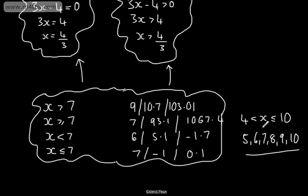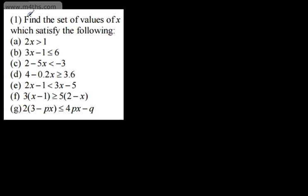In this video we're going to start by looking at some basic revision on linear inequalities. In a later video we will consider quadratic and then combined quadratic and linear inequalities. So, we're asked to find the set of values of x which satisfy the following inequalities. On the first one: 2x is greater than 1. Dividing both sides by 2, we get x is greater than 1 half.